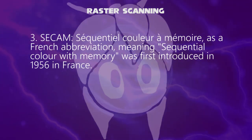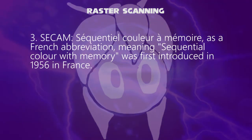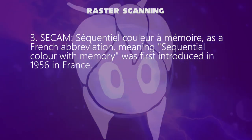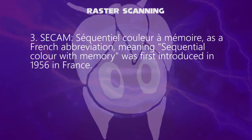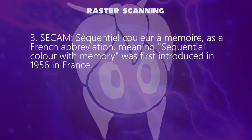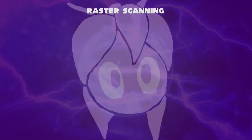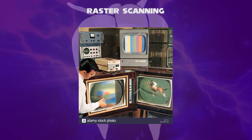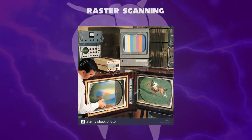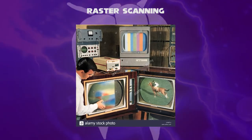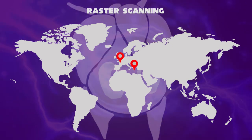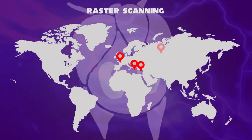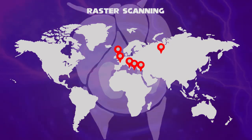And finally, SECAM, in French meaning sequential color with memory, is an analog color television system first used in France in 1956, followed by other studies to improve compatibility and image quality. SECAM was later adopted by former French and Belgian colonies, Greece, Cyprus, Russia, UK, and Italy.